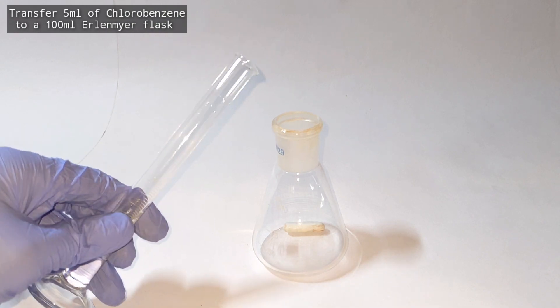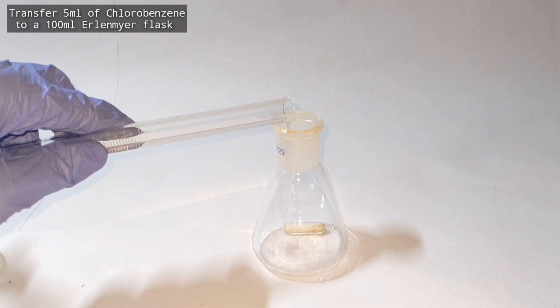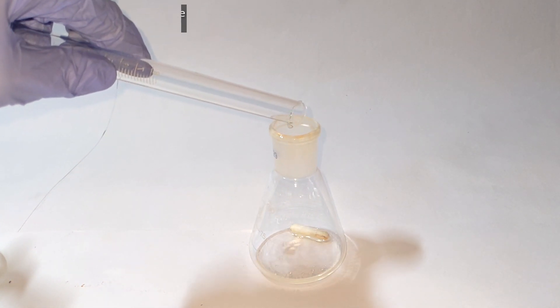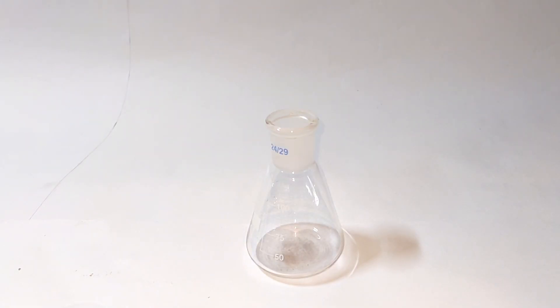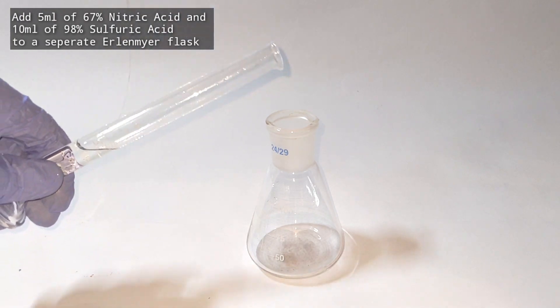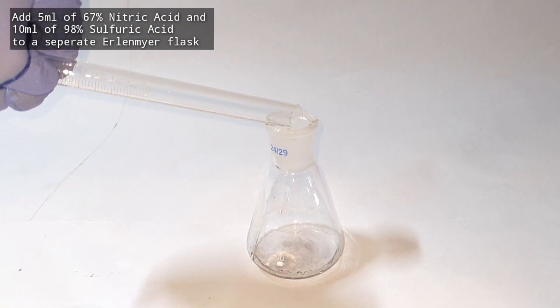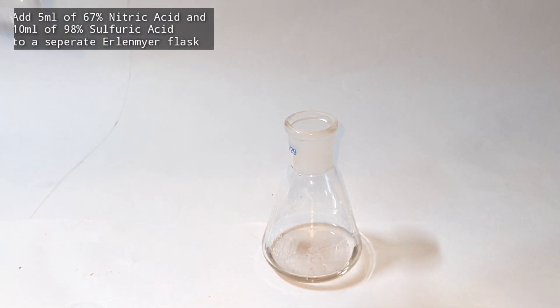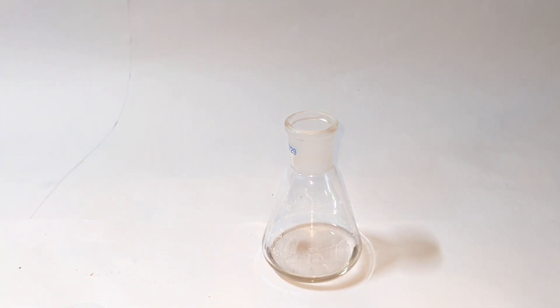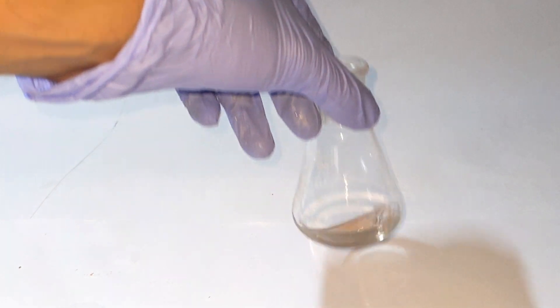Start by taking 5 ml of chlorobenzene to a 100 ml Erlenmeyer flask which is already equipped with a magnetic stirring bar. Take another 100 ml Erlenmeyer flask and add 5 ml of 67% concentrated nitric acid and 10 ml of concentrated sulfuric acid. Swirl the flask to mix both the acids.